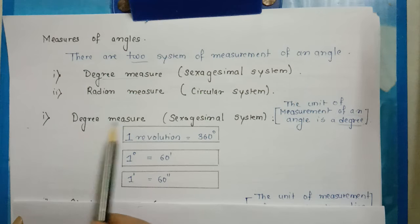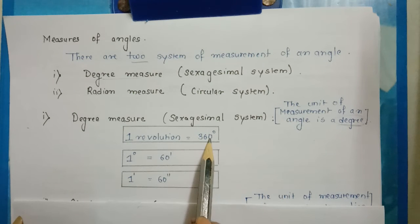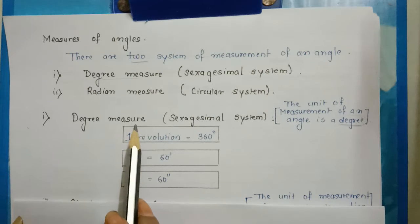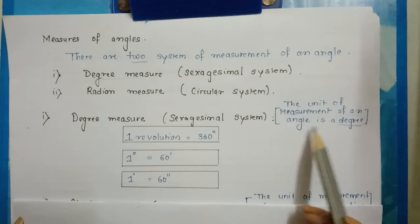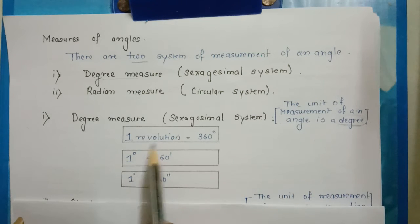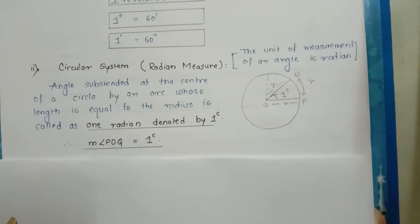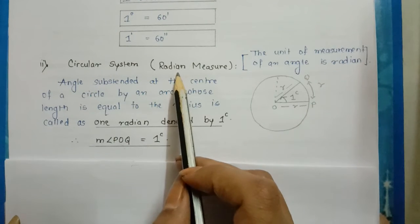In degree measure, one revolution is equal to 360 degrees, one degree is equal to 60 minutes, and one minute is equal to 60 seconds. Similarly, for the circular system, which is also known as the radian measure, the unit of measurement of an angle is radian.